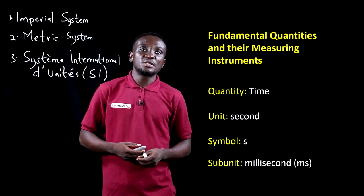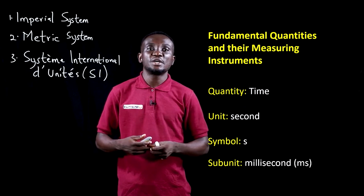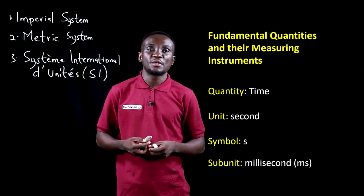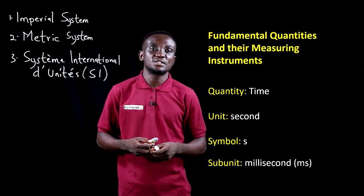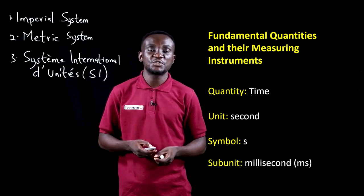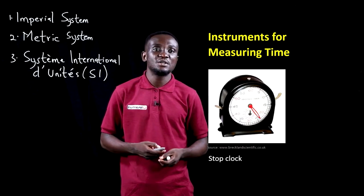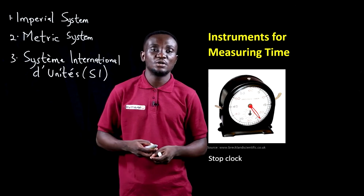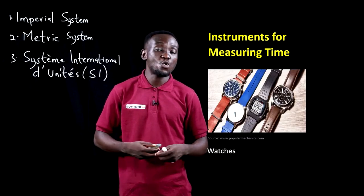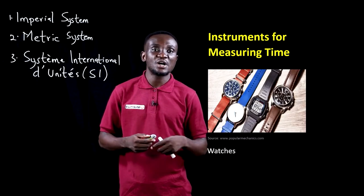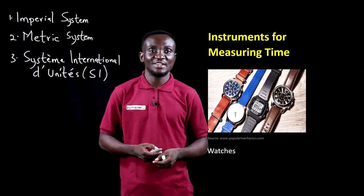When it comes to measuring time, we use the second, with the symbol s. The subunit is the millisecond. Instruments for measuring time largely include the stop clock and the watch that we put around our wrist to check the time.